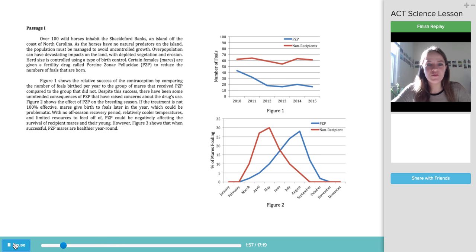Passage one, over 100 wild horses inhabit the Shackleford Banks, an island off the coast of North Carolina. As the horses have no natural predators on the islands, the population must be managed to avoid uncontrolled growth. Overpopulation can have devastating impacts on the land with depleted vegetation and erosion. Herd size is controlled using a type of birth control. Certain females, mares, are given a fertility drug called porcine zona pellucidae, PZP, to reduce the numbers of foals that are born. Figure one shows the relative success of the contraception. So figure one, we're dealing with the success of contraception by comparing the number of foals birthed per year to the group of mares that received PZP compared to the group that did not.